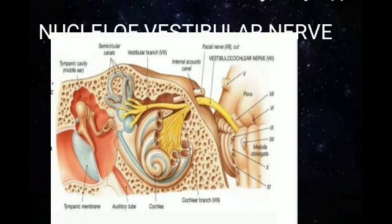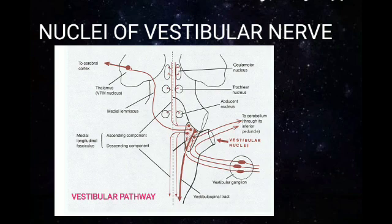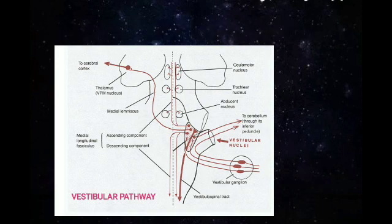Now let us see what are the nuclei related to this vestibular nerve. The nuclear complex of the vestibular nerve is called the vestibular nuclear complex. This consists of various nuclei: inferior, superior, lateral, and medial subdivisions. These are located in the vestibular area of the lateral part of the floor of the fourth ventricle.